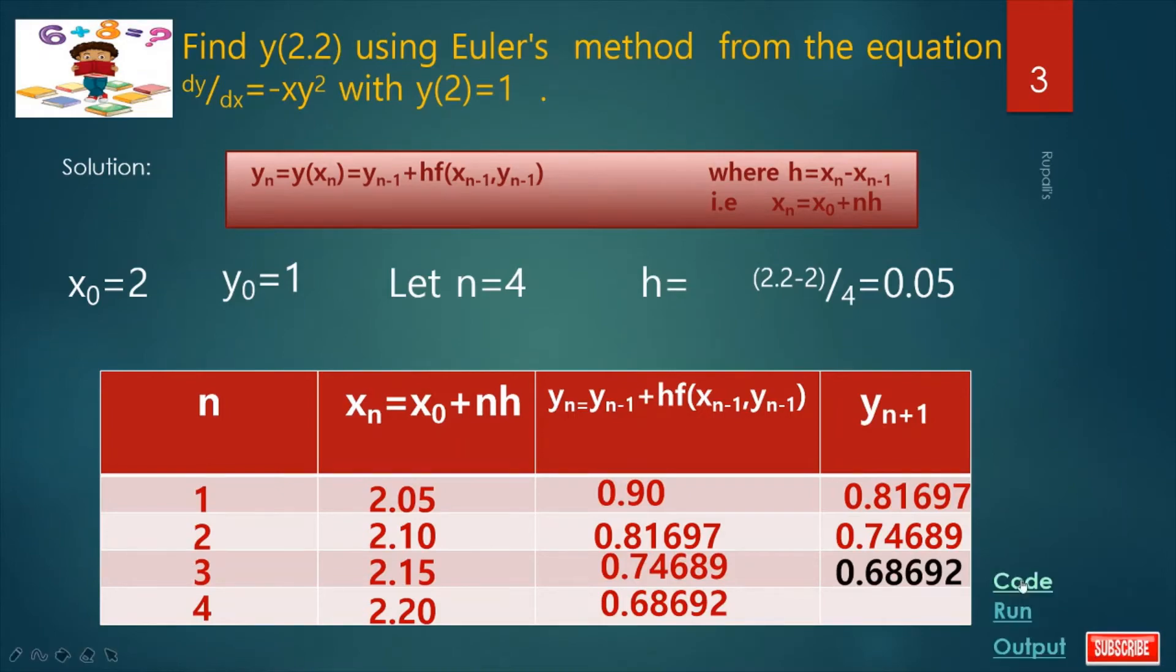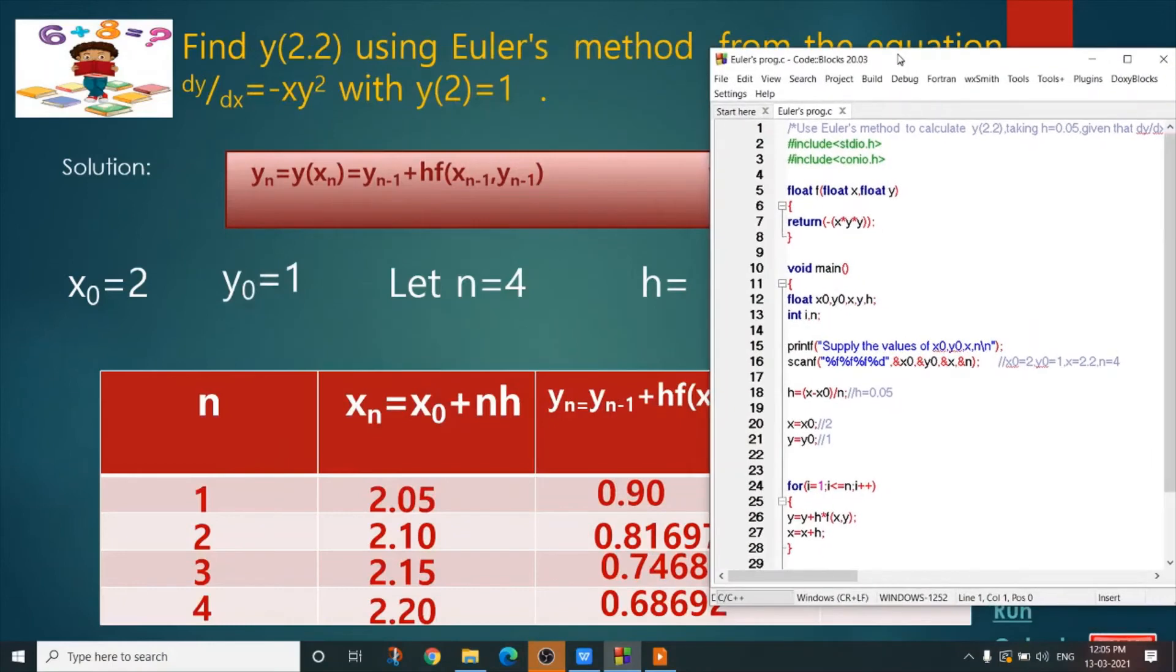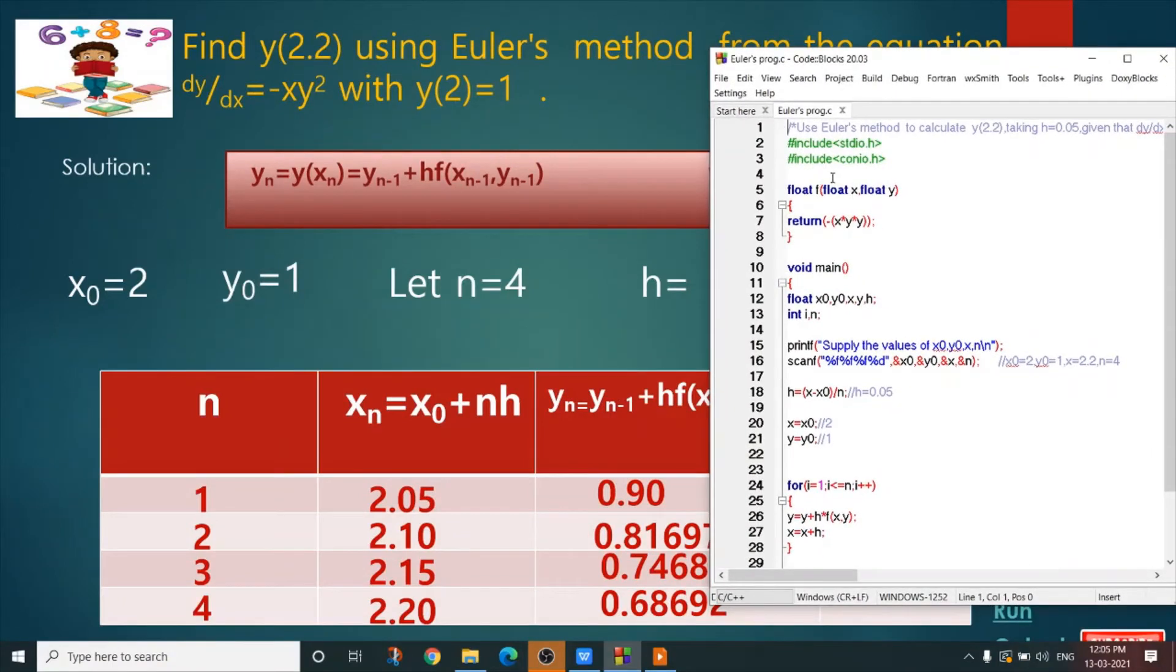Now coding. This is our code. There is one function. Function name is f. Return type is float and two arguments are there. They are also float x and y. What is the body of the function? Body of the function is our equation minus xy squared. But if the problem is different, if the equation is different then you have to write that equation here within the body of the function.